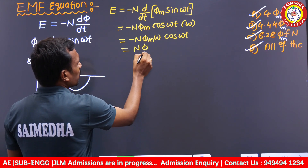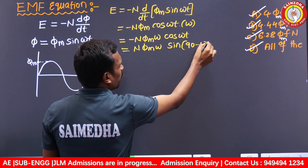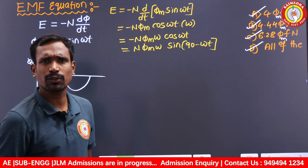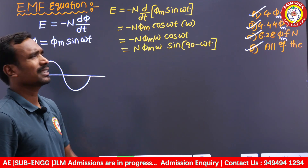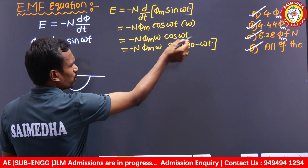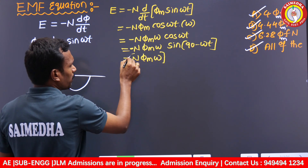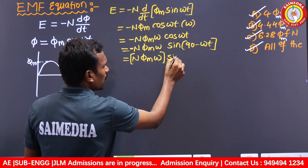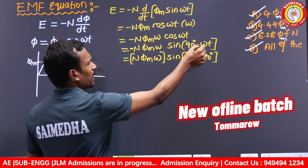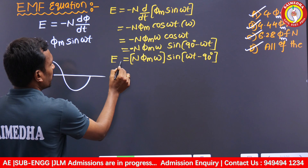We can rewrite cos(ωt) as sin(90° − ωt). Since in the first quadrant all values are positive, sin(90° − ωt) = cos(ωt). Moving the negative sign inside the bracket gives: E = N × Φ_M × ω × sin(ωt − 90°). This is our EMF equation.